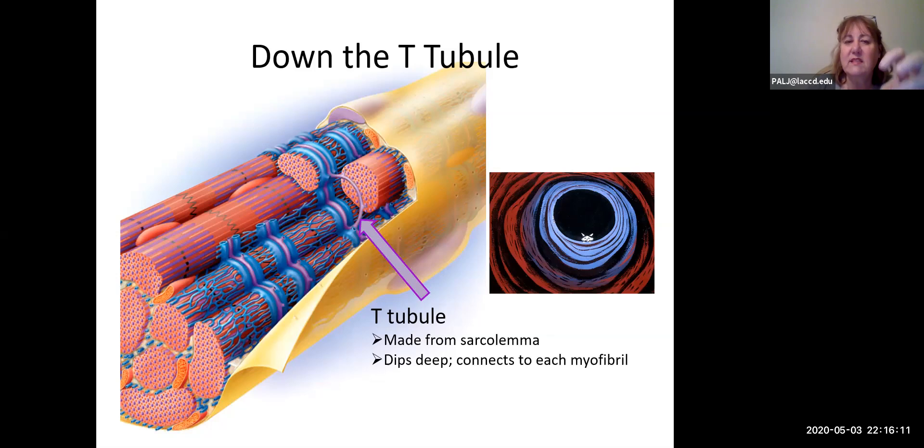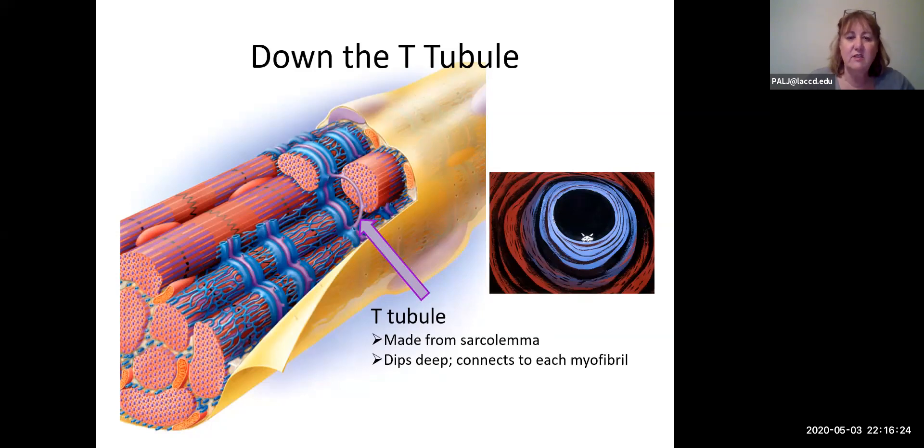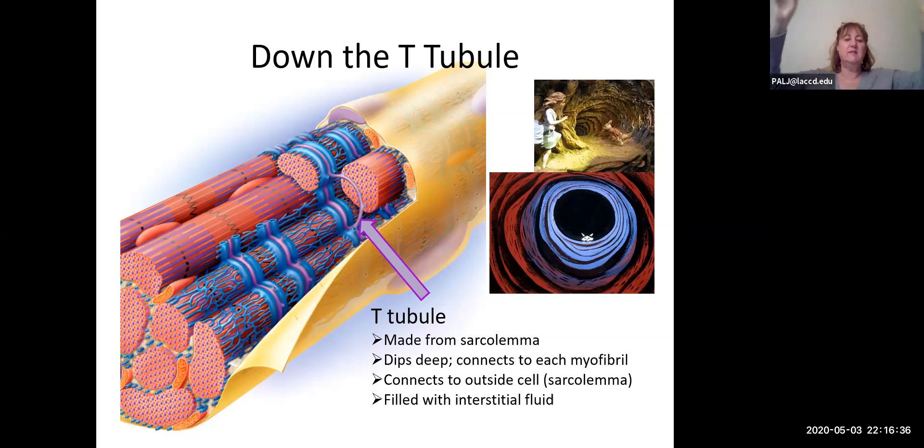These three structures are traveling together and they're completely surrounding a group of myofibrils, so that all myofibrils are connected to this as well as being connected to the outside of the cell because of the opening in the sarcolemma. So whatever interstitial fluid is out here travels down the T-tubule and is going around all the myofibrils for the entire muscle cell.